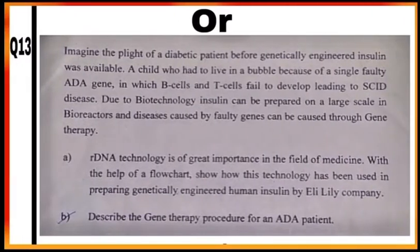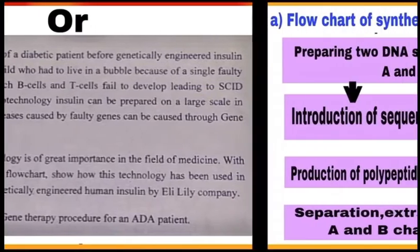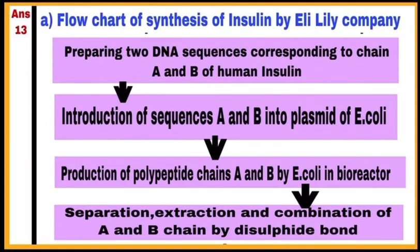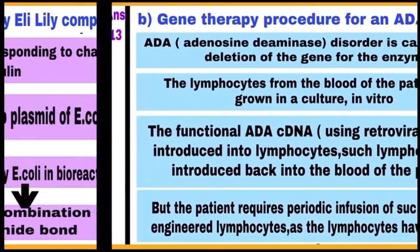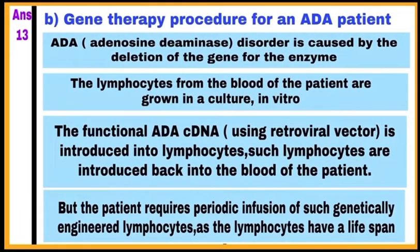This is another case-based question on genetically engineered insulin and gene therapy — you have to attempt any one of the case-based questions. This is the flow chart of steps involved in insulin synthesis, followed by the steps involved in gene therapy of ADA deficiency disease.